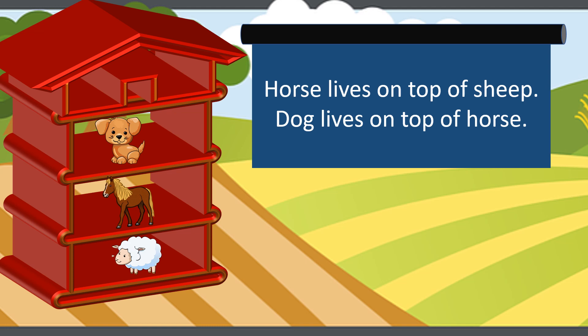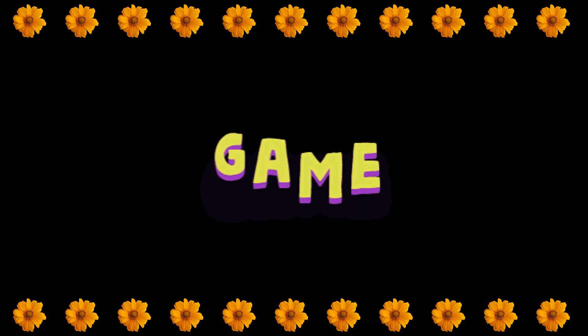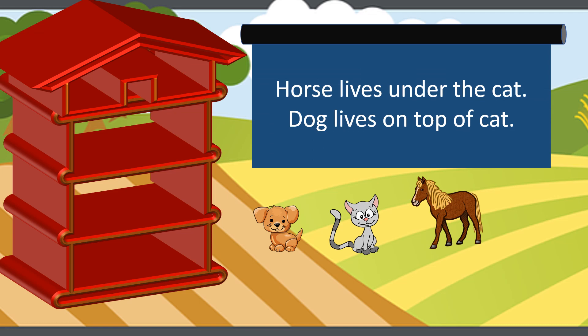I hope you also have the same positions in mind. Now one more last game — let's start! We have dog, cat, and horse to play with us. Let's see what the next clue is. The next clue says horse lives under the cat and dog lives on top of cat. Interesting — we have another combination of 'under' and 'on top of'. Let's start placing. I'm sure you must have got it by now.